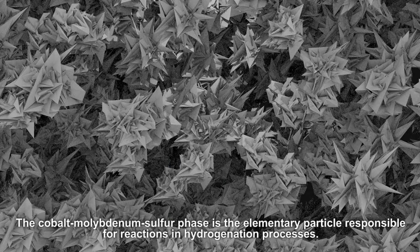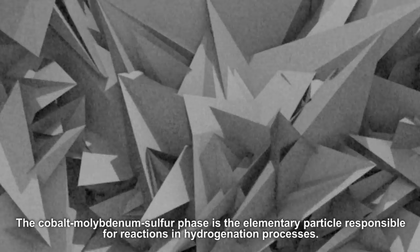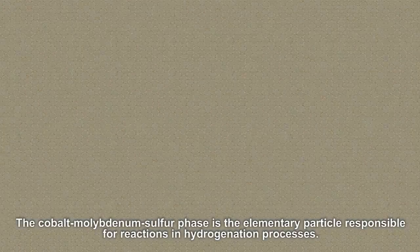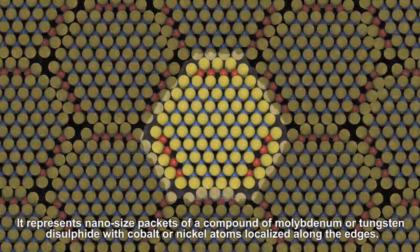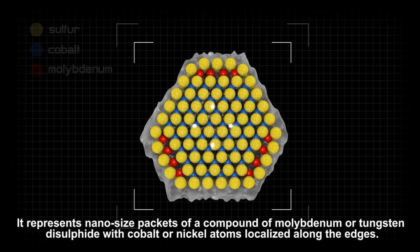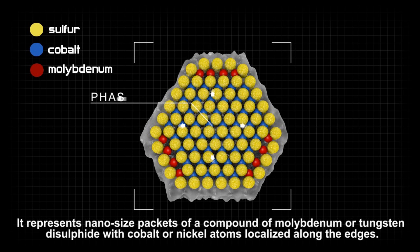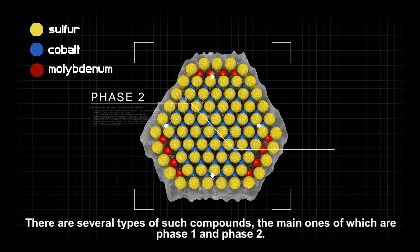The cobalt molybdenum sulfur phase is the elementary particle responsible for reactions in hydrogenation processes. It represents nano-sized packets of a compound of molybdenum or tungsten disulfide with cobalt or nickel atoms localized along the edges. There are several types of such compounds,